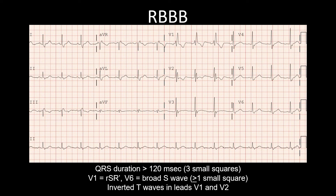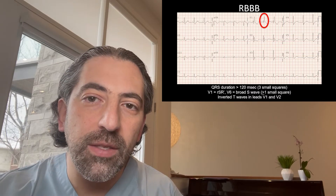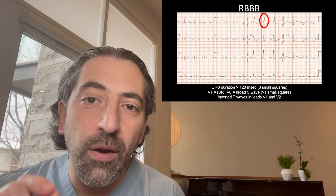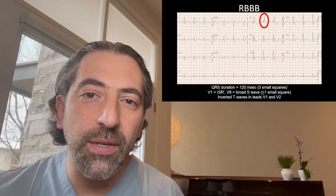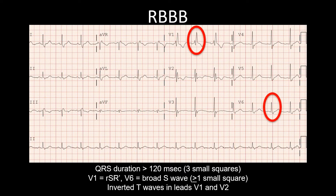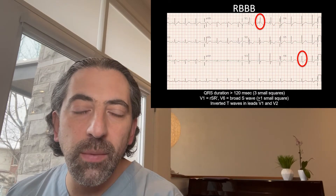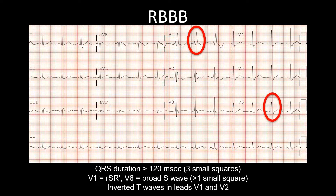This creates a large broad R prime in lead V1 and a large broad s wave in lead V6, and overall a wider QRS complex. This is a typical right bundle branch block ECG. In lead V1 you see an RSR prime complex — a small r, an s wave, and a large broad R prime generated by slow depolarization of the right ventricle. In V6 you see a terminal broad s wave, also generated by slow depolarization of the right ventricle.